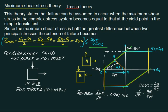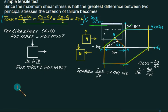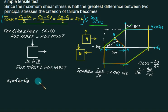Maximum shear stress theory (MSST) is almost true for all faces, but there is one condition where it cannot be applied: if sigma 1 equals sigma 2 equals sigma 3, then tau max will be 0, meaning the factor of safety becomes infinity. So for hydrostatic stress, we cannot apply MSST.